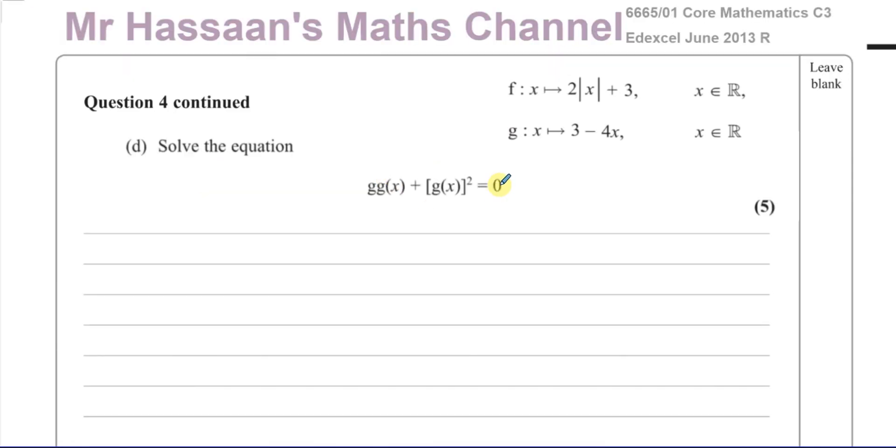And then part D says solve the equation g of gx plus g of x all squared equals 0. So the first thing we've got to do is find what g of gx is, and then we've got to take the function g of x and square it and equate it to 0. So we've got to find this first, which is basically when you've got to put g of x inside function g, and then you've got to add the square of g of x, which is going to be 3 minus 4x all squared, and you've got to equate that to 0.